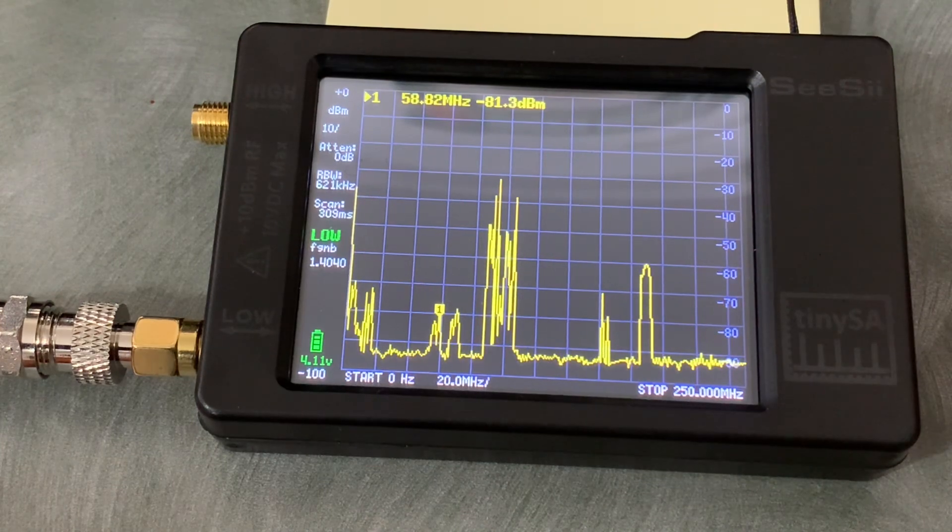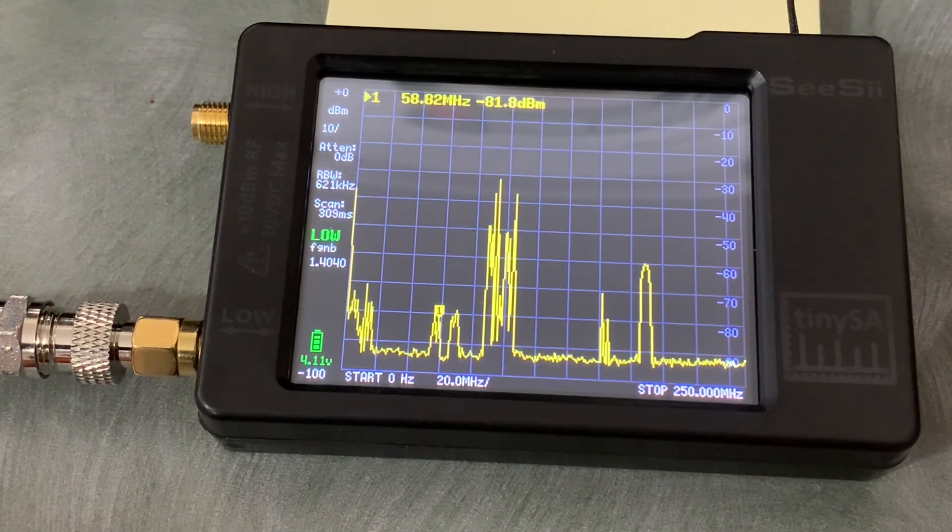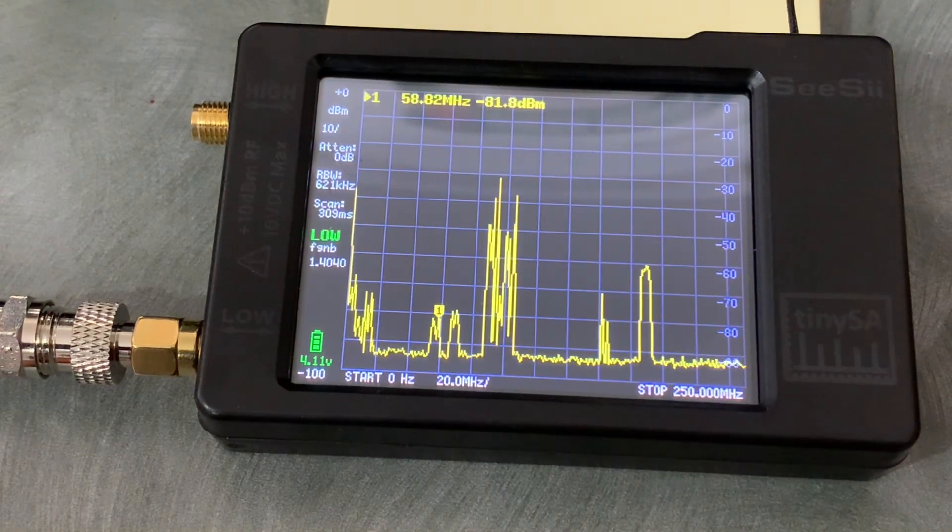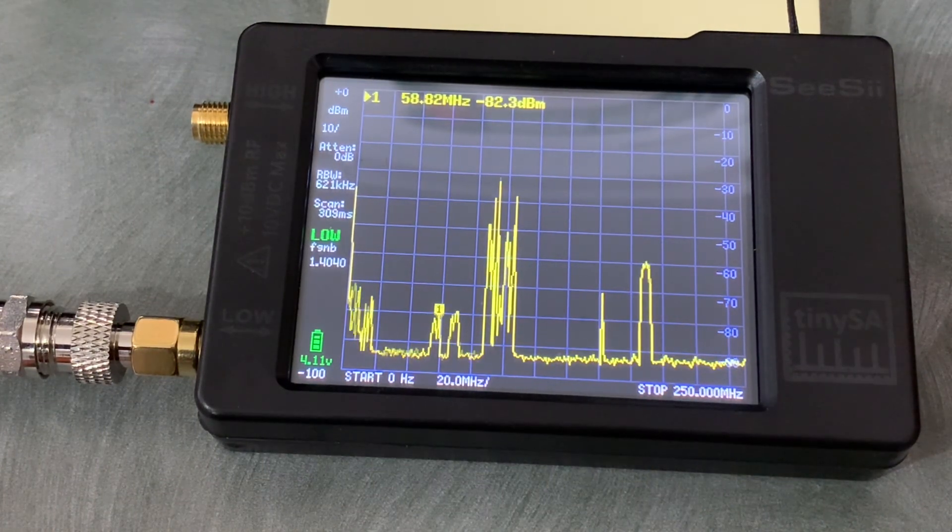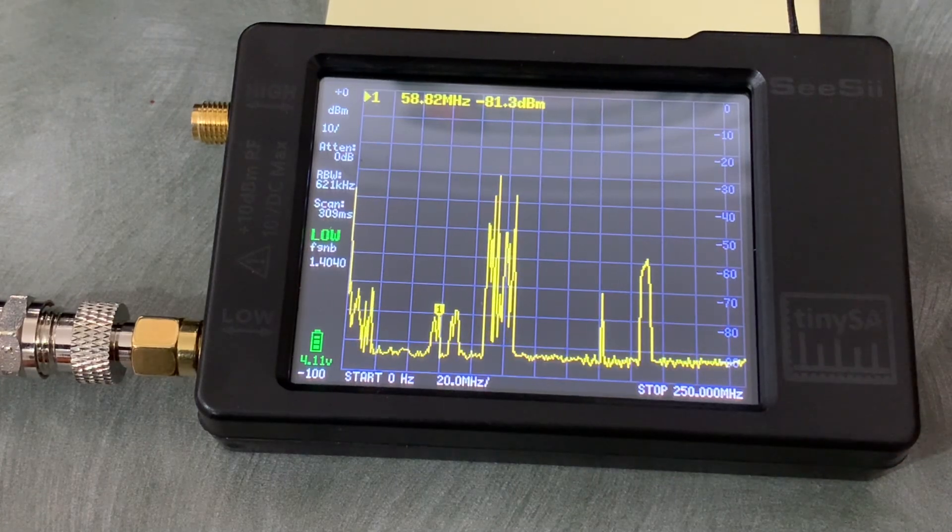Okay, this is low VHF TV channel 2, CKPR in my area. You can see that the levels of it are much lower compared to some of the other signals on the graph here.